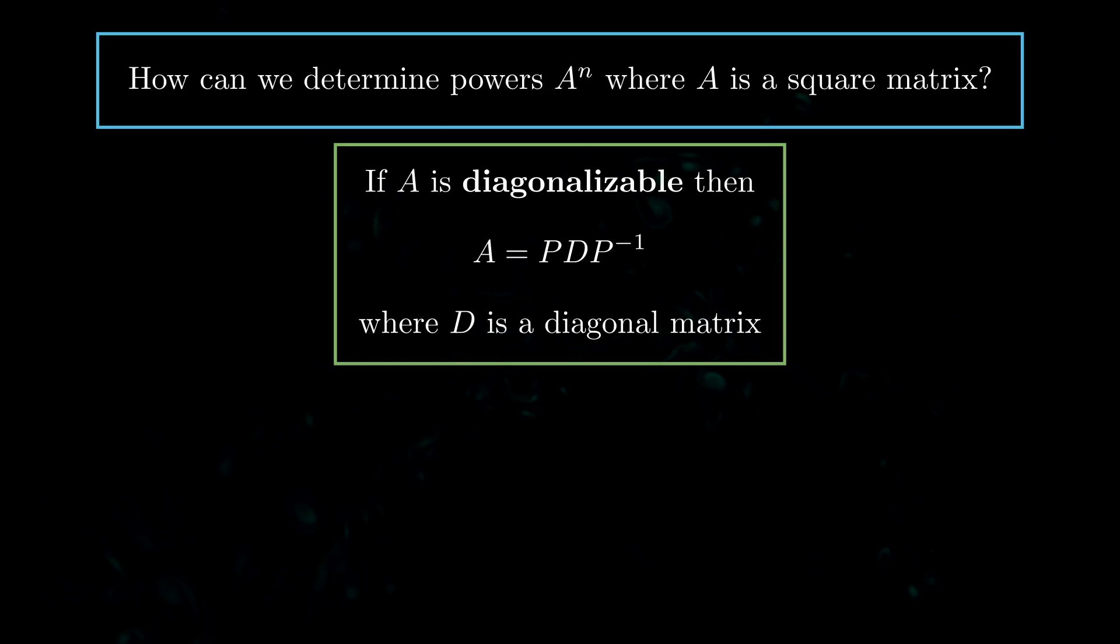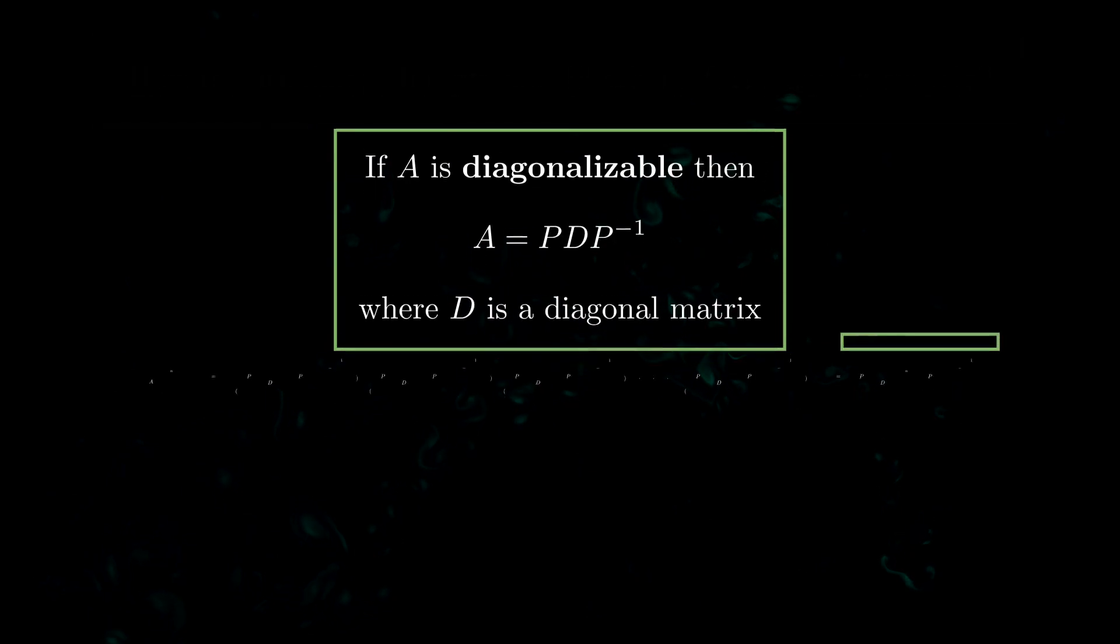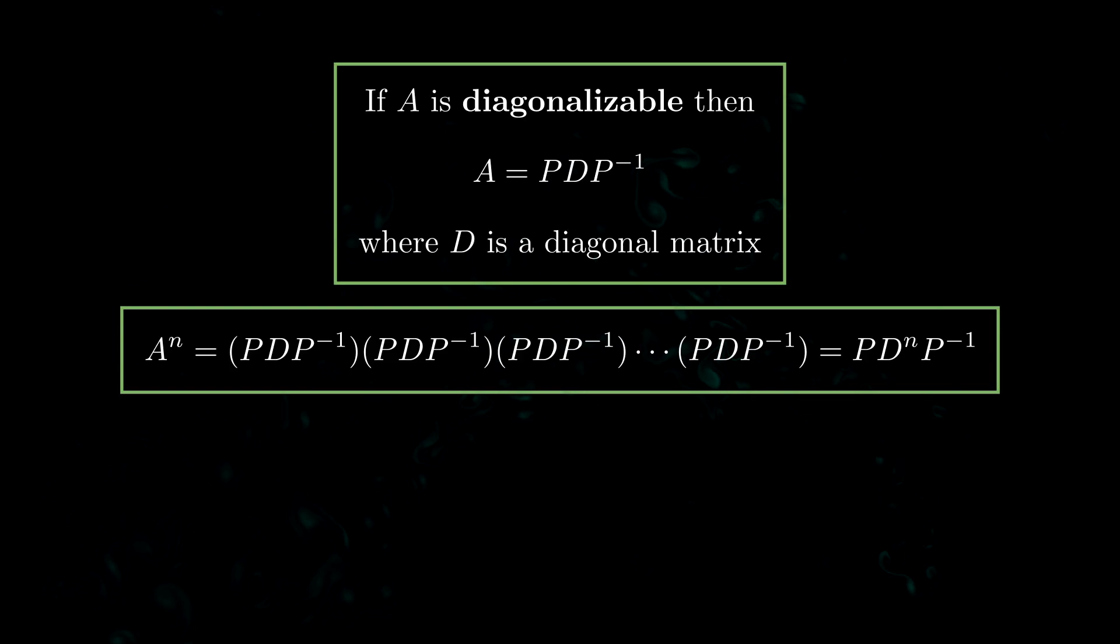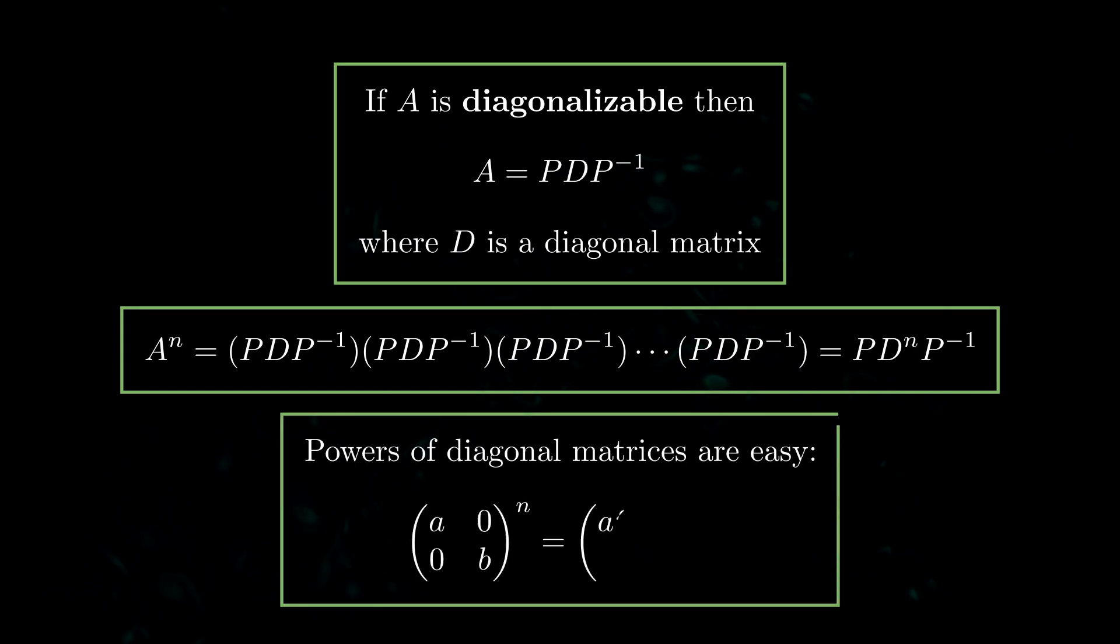So just to remind you this is what it means for a matrix A to be diagonalizable it just means that we can write it as P times D times P inverse where D is a diagonal matrix. So how does this actually help us? Well if we have to take the nth power of A that's the same as just multiplying A by itself n times which if A is diagonalizable is just the same as multiplying P D P inverse by itself n times which is just equal to P D to the n P inverse. And why is this easier? Because diagonal matrices are very easy to calculate the powers of.